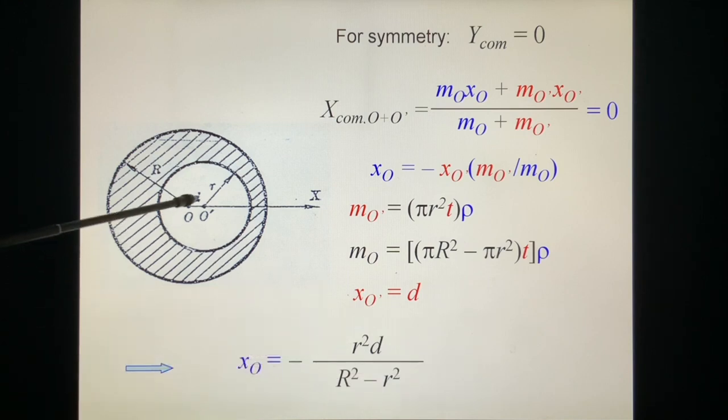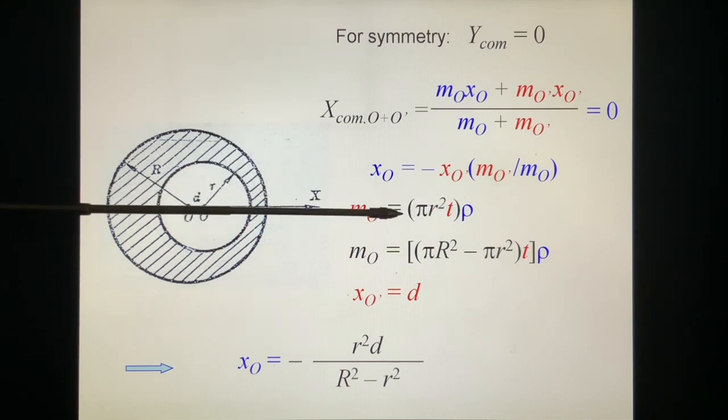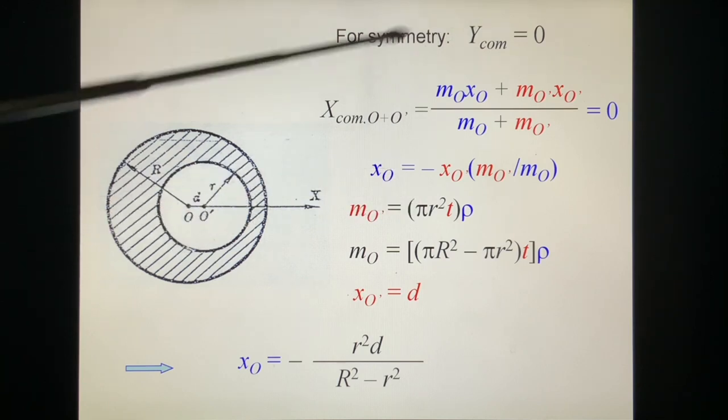So we put these three numbers inside. I get X_O equal to minus r squared d over big R squared minus small r squared. This minus is from this side. It's reasonable because on this side it has more pieces. How about the y? By symmetry, the top and the bottom are symmetric, so it must lie on the x-axis. In other words, Y_com equals zero. That's it.